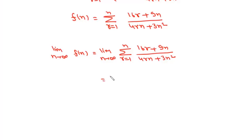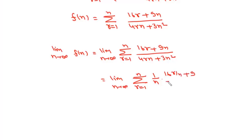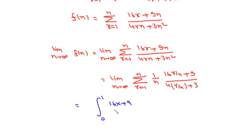Now we divide everything by n². We write this as limit n tends to infinity of the summation r varies from 1 to n, taking 1/n here, it becomes (16r/n plus 9) upon (4r/n plus 3). This is nothing but a limit of sum, so we can change it to the integral from 0 to 1 of (16x plus 9) upon (4x plus 3) dx.